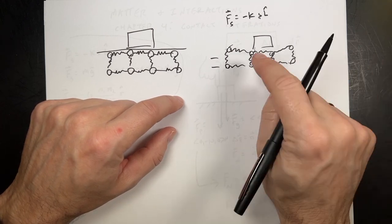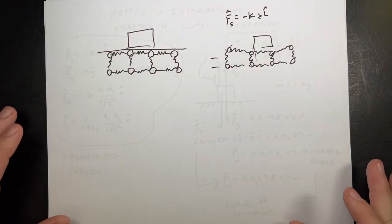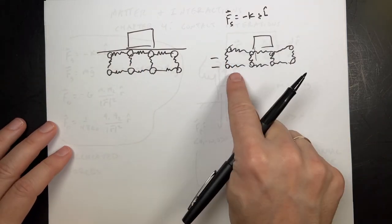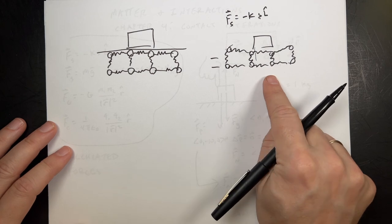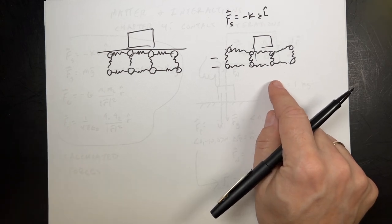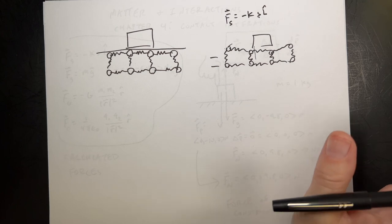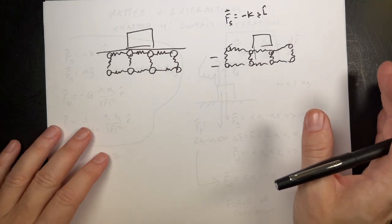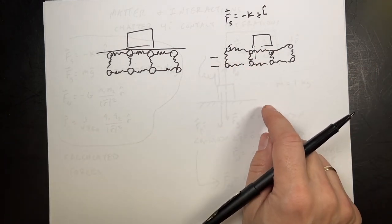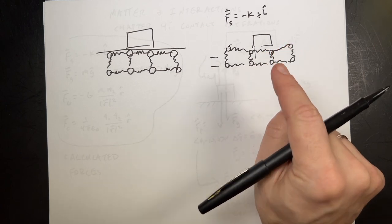We're not going to calculate each atom individually though, because how many atoms are in a table? It's more than eight — it's something like 10^24. There are a lot of them in there, and we don't want to calculate that many different spring interactions. So that's why we model this as a single force.